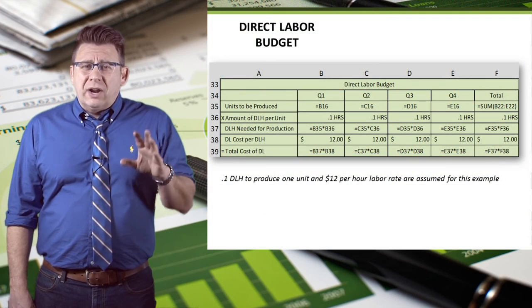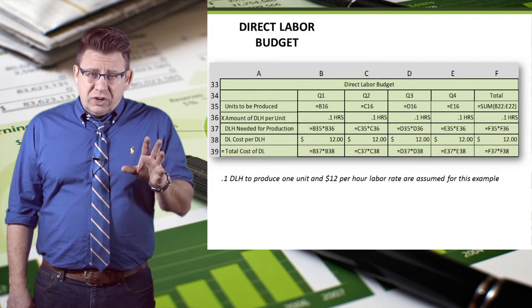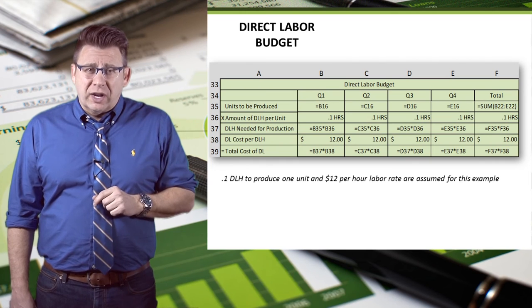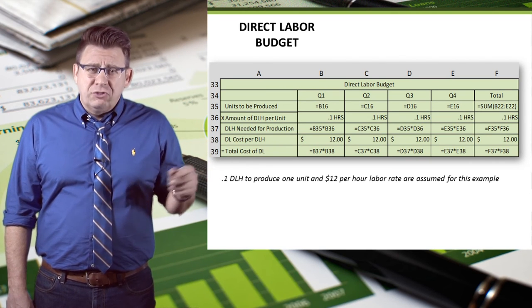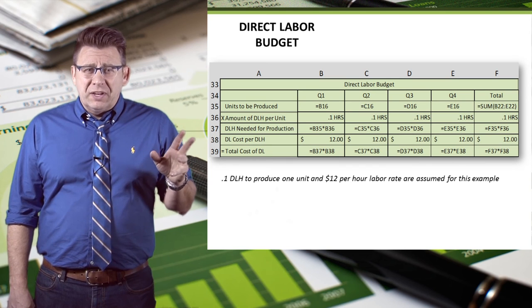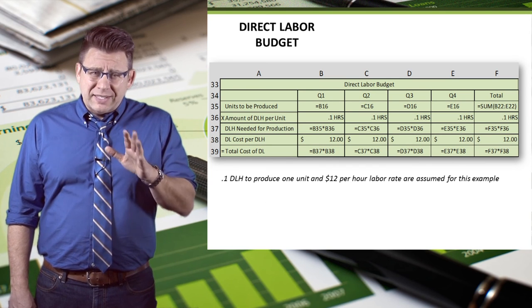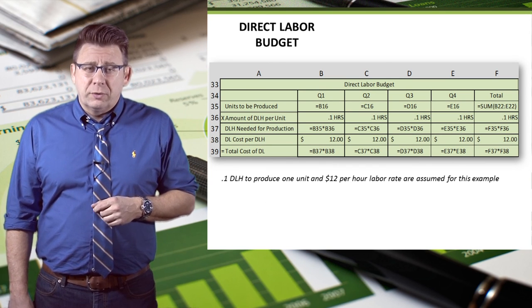Direct labor hours needed for production and the total cost of direct labor can both be formulas, as I've shown here. Finally, some of the numbers have just been assumed because I want to keep the examples straightforward.